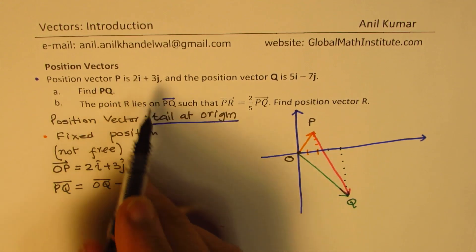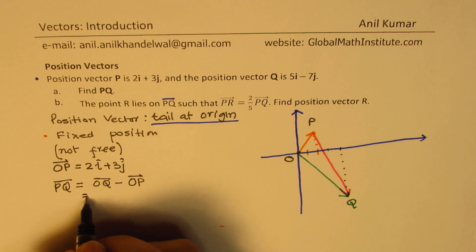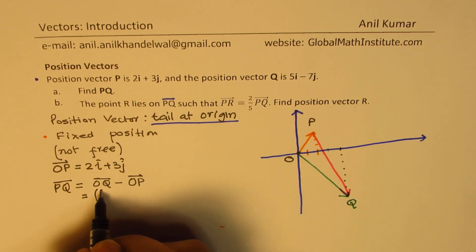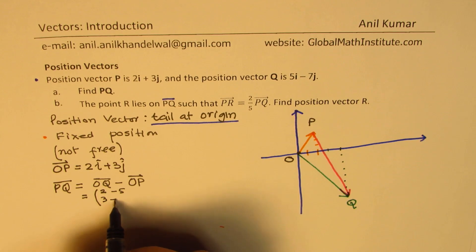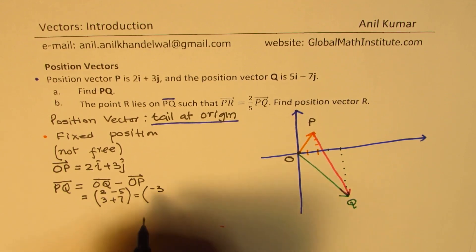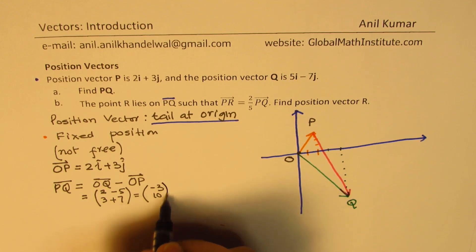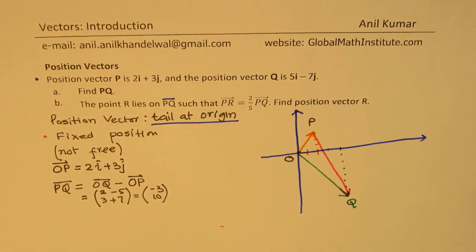So in our case, we could write this in the form of a column also. So it is 2 minus 5, 3 minus minus 7, which is 3 plus 7, which is equal to minus 3, 10. So that becomes the vector P to Q.